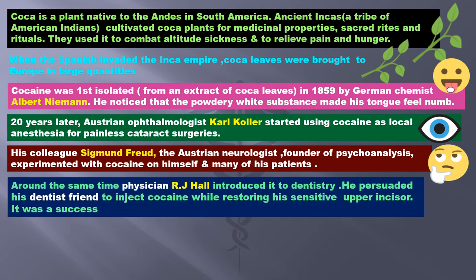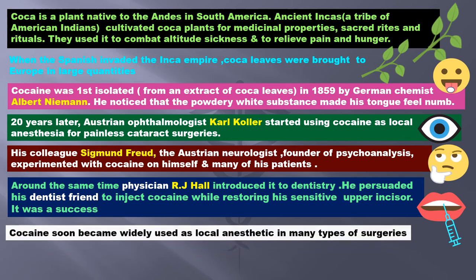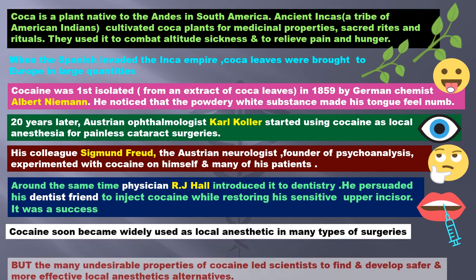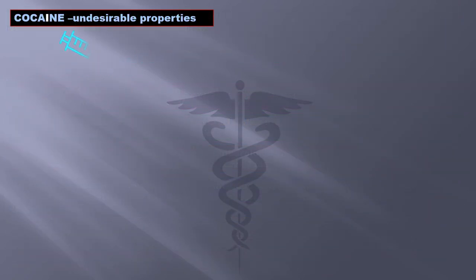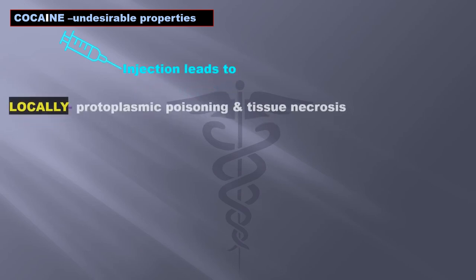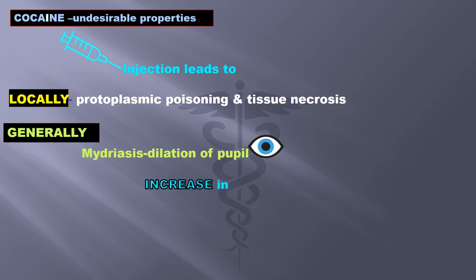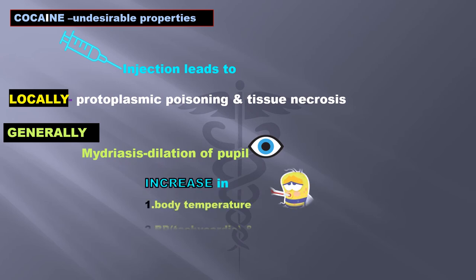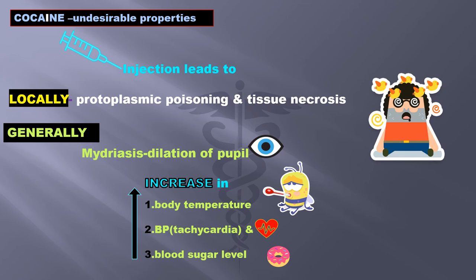Around the same time, physician R.J. Hall introduced cocaine to dentistry — he persuaded his dentist friend to inject cocaine while restoring a sensitive upper incisor, and it was a success. Cocaine soon became widely used as a local anesthetic in many types of surgeries, but its many undesirable properties led scientists to develop safer and more effective alternatives. On injection, cocaine leads to local protoplasmic poisoning and tissue necrosis. Generally there is mydriasis (dilation of the pupil), increase in body temperature, increased BP leading to tachycardia, and increased sugar levels, to name a few.